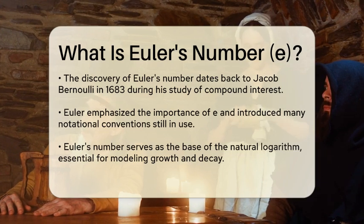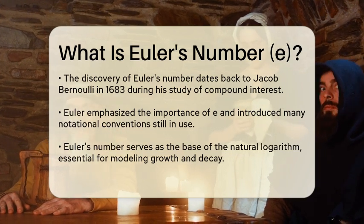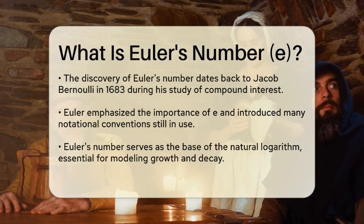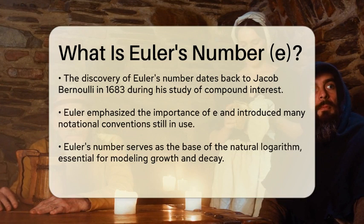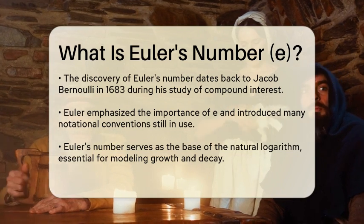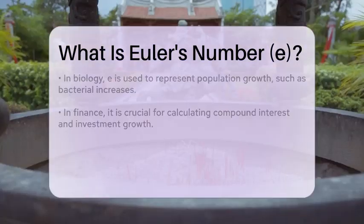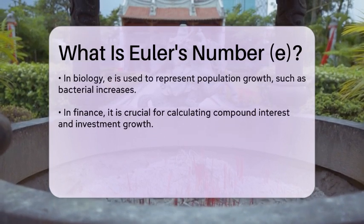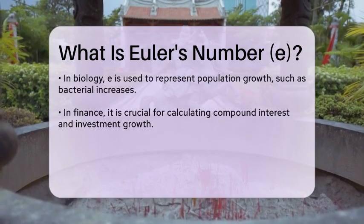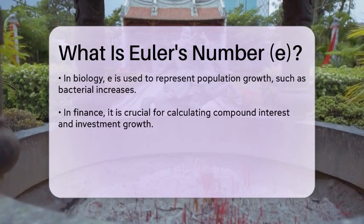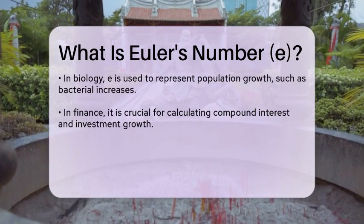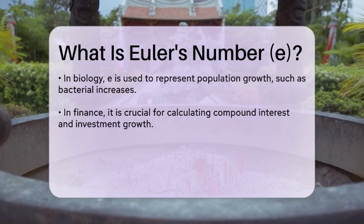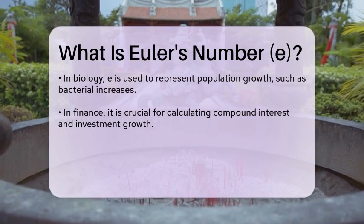One of the most notable features of Euler's number is its role as the base of the natural logarithm. This mathematical function is essential for describing growth and decay in many natural phenomena. For example, in biology, e is used to model population growth, such as the rapid increase in bacterial populations. In finance, it is vital for calculating compound interest, showing how investments can grow over time.